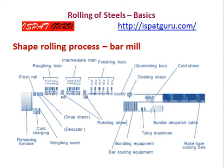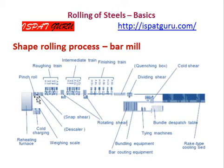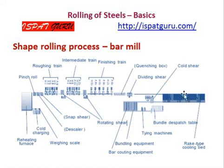This is the layout of a bar mill, which includes a reheating furnace, a roughing group of strands, an intermediate group of strands, a finishing group of strands, a cooling bed, and the finishing area.